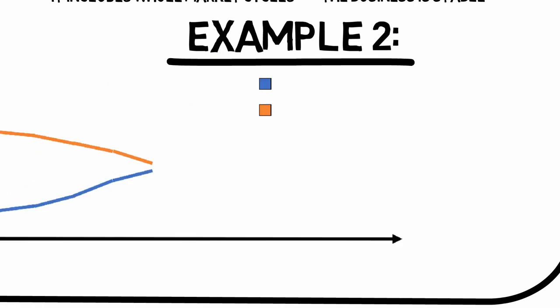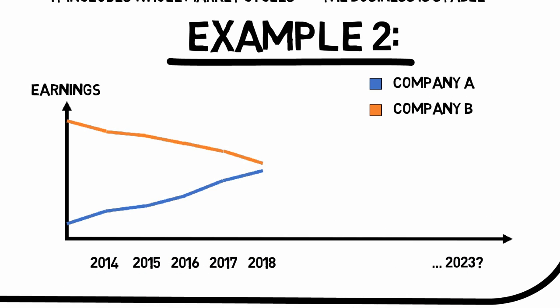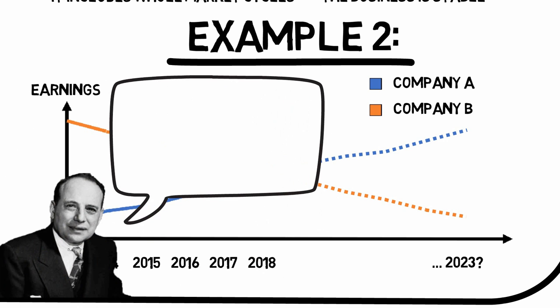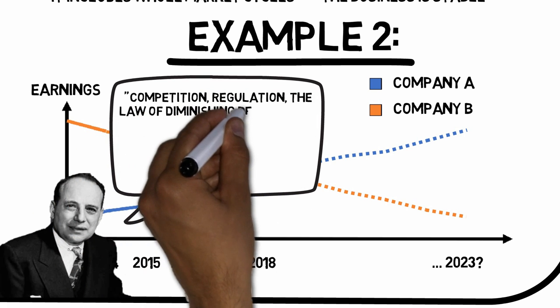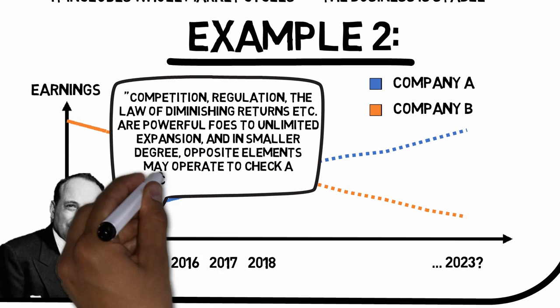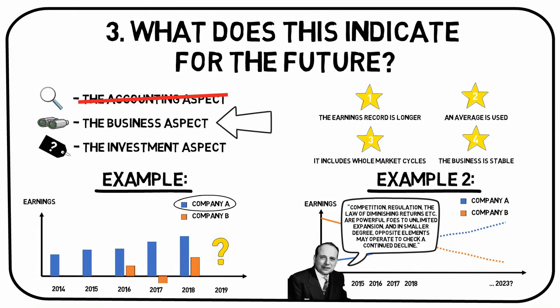It is truly tempting to just project the earnings trend of the past into the future. According to Benjamin Graham, one must be very cautious when doing this. Investment value can be related only to demonstrated performance. Competition, regulation, the law of diminishing returns, and so on are powerful foes to unlimited expansion. And in smaller degree, opposite elements may operate to check a continued decline. In other words, neither abnormally good nor abnormally bad conditions for a business last forever. In the third and fourth videos, we'll answer: what is a reasonable valuation of the security?